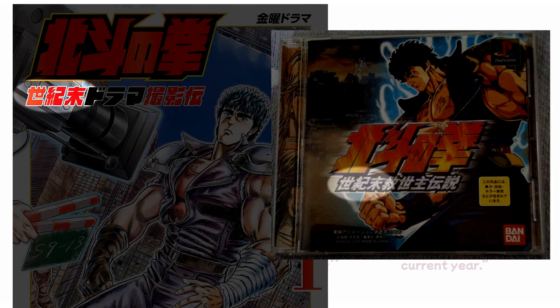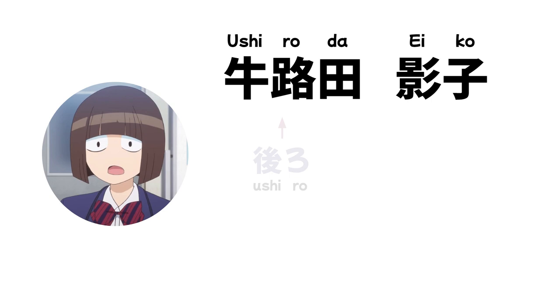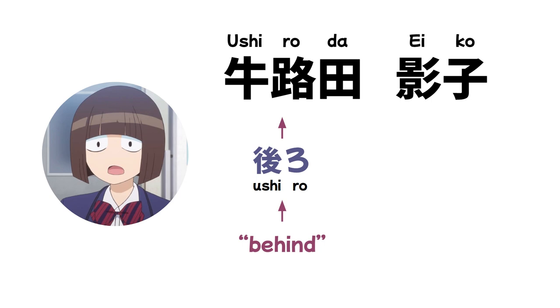Ushiroda Eiko: 'Ushiro' means 'behind,' which is appropriate because she sits behind Komi-san in class. Her given name Eiko uses the kanji for 'shadow,' and shadows often follow behind you.